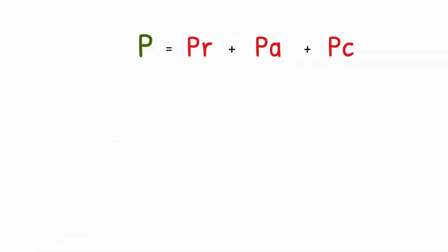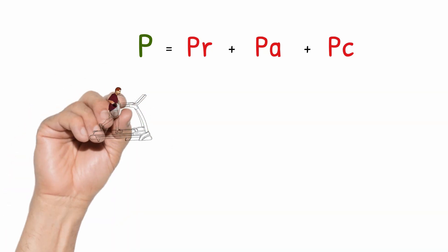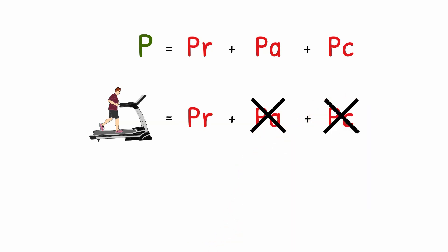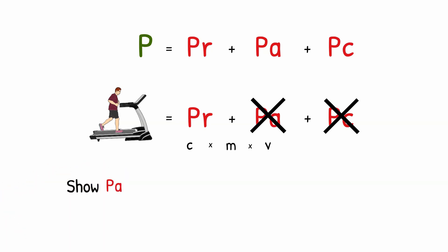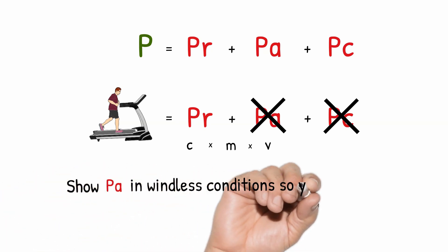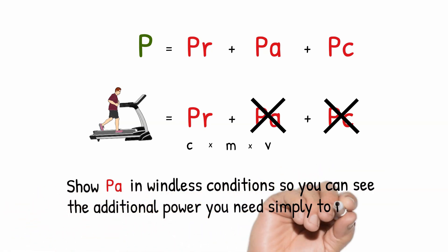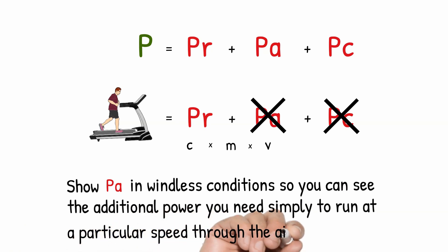Now we can calculate our overall power because we know how to calculate running forwards, running through air, and running uphill. For our examples, we're going to assume you're on a treadmill, which means we can do away with air resistance and climbing. So our model becomes just the cost of running times your mass times velocity. However, we will show the cost of running through air in windless conditions so that you can see the additional power requirement simply from running at a particular speed through air — and you have to add that to your requirement to run at a particular speed.